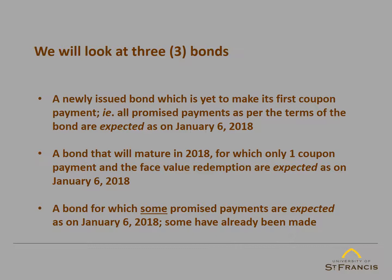The second bond that we will look at is a bond that was issued in the past but will mature in 2018. For this bond, only one coupon payment and the face value redemption are expected standing on January 6, 2018. All other coupon payments have already been made — they are in the past and do not contribute to the value of the bond today.